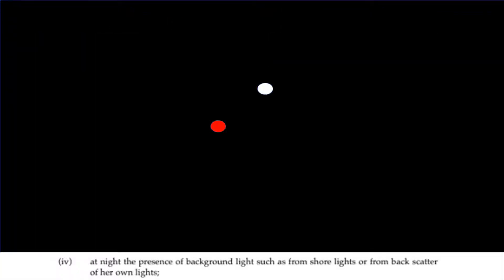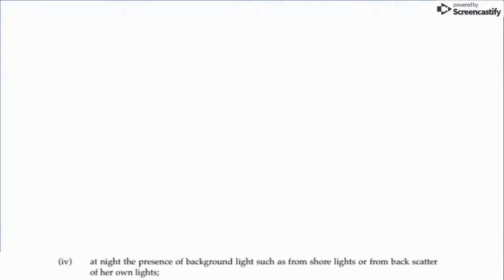Another look at the same power-driven vessel in the dark on a clear night. Our own masthead light behind us can absolutely obliterate what we can see.